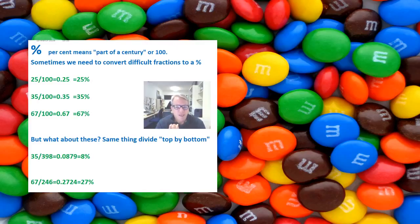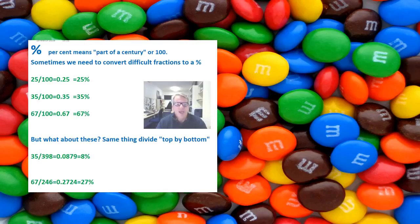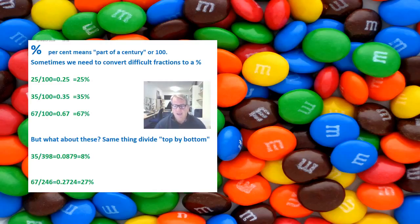So, how on earth do we count the number of M&M's and convert that to a percentage? You're going to count up the number of M&M's in a pack, split them into their different colours, and work out the number of each colour. It would be nice to find a percentage if there were 100 M&M's in a pack, because percent means part of a hundred. So if we had 100 M&M's and 25 were red, that's 25% are red; 35 were blue, 35% are blue.